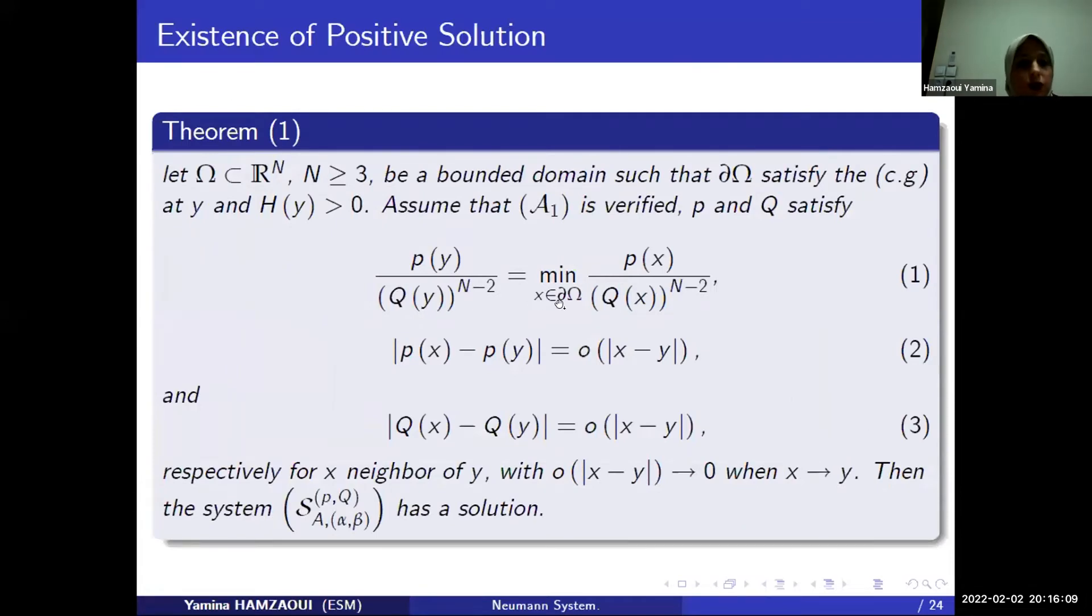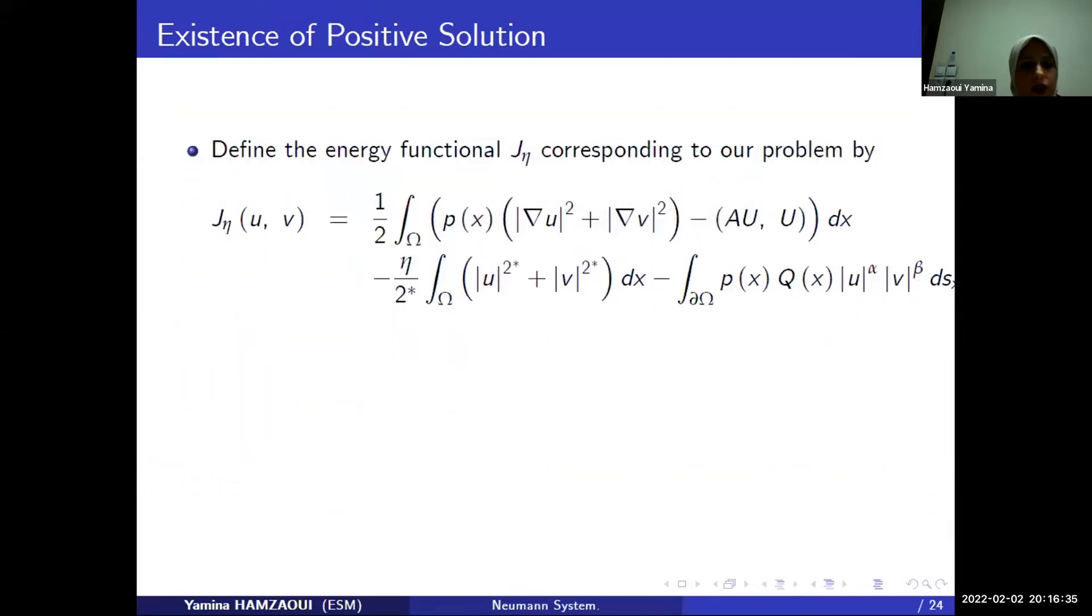The theorem for the existence of positive solution. Let omega be a bounded domain so that the edge of omega satisfies the geometrical condition at y. And the mean curvature at this point is positive. We assume that the eigenvalues of the matrix are negative. P and Q satisfy 1 to 2 respectively. Then our system has a positive solution.